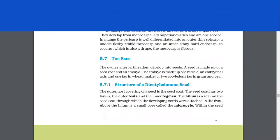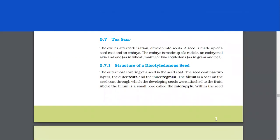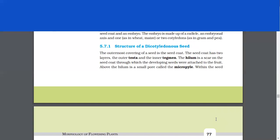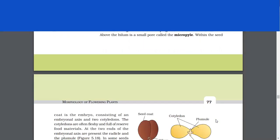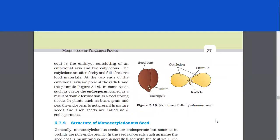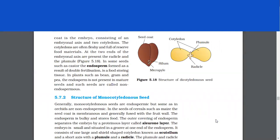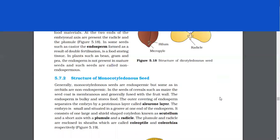The seed. The ovules after fertilization develop into seeds. A seed is made up of a seed coat and an embryo. The embryo is made up of a radicle and embryonal axis and one or two cotyledons. Structure of a dicotyledonous seed. The outermost covering of a seed is the seed coat. The seed coat has two layers, the outer testa and the inner tegumen. The hilum is a scar on the seed coat through which developing seeds were attached to the fruit. Above the hilum is a small pore called the micropyle. Within the seed coat is the embryo consisting of an embryonal axis and two cotyledons. The cotyledons are often fleshy and full of reserved food materials. At the two ends of the embryonal axis are present the radicle and the plumule. In some seeds such as castor, the endosperm formed as a result of double fertilization is a food storing tissue. In plants such as bean, gram and pea, the endosperm is not present in mature seeds and such seeds are called non-endospermous.